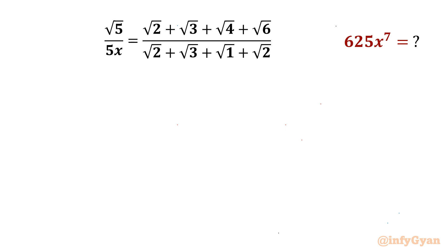Welcome to Infigyan, my dear friends. In today's video we have one very interesting question from radical maths. We have to evaluate 625x to the power 7. The given equation is: root 5 over 5x equals root 2 plus root 3 plus root 4 plus root 6, all over root 2 plus root 3 plus root 1 plus root 2.